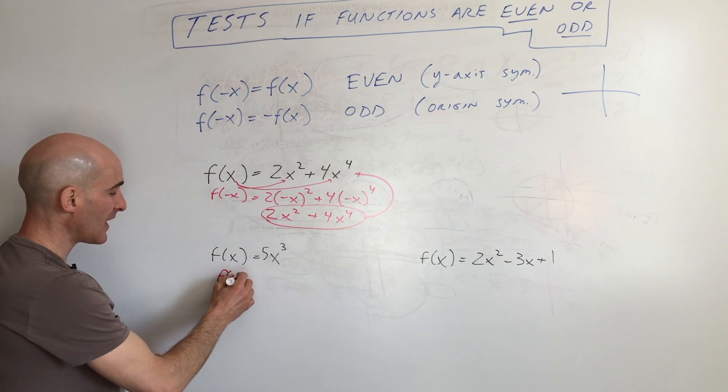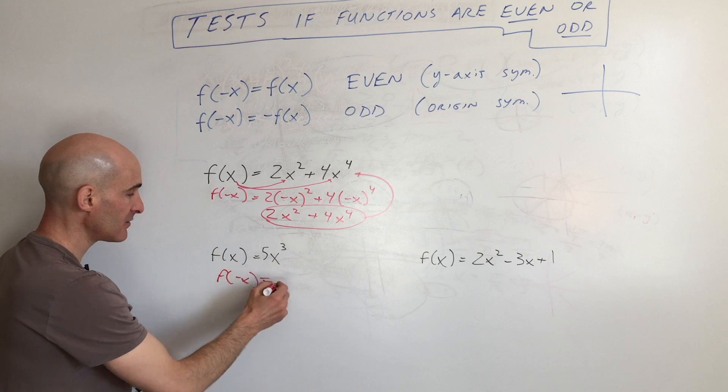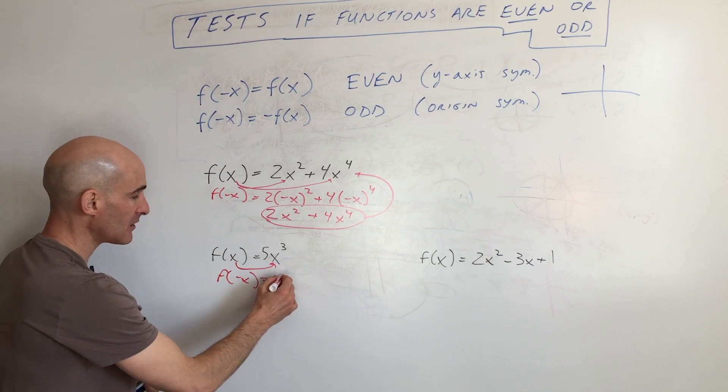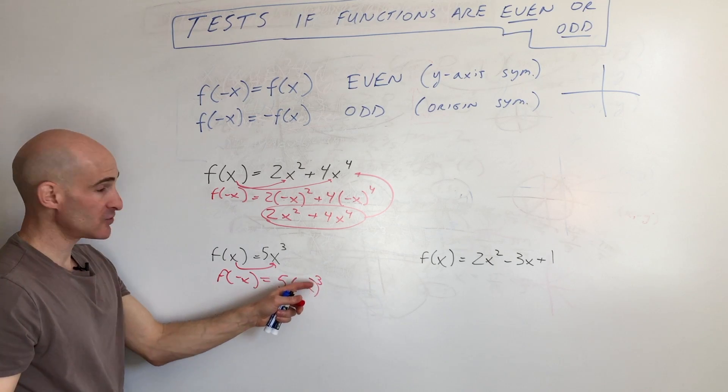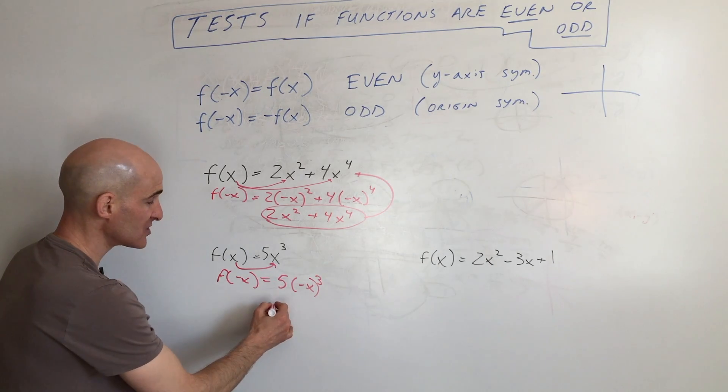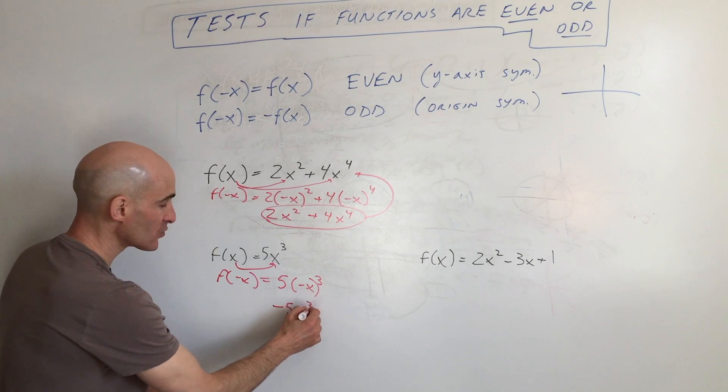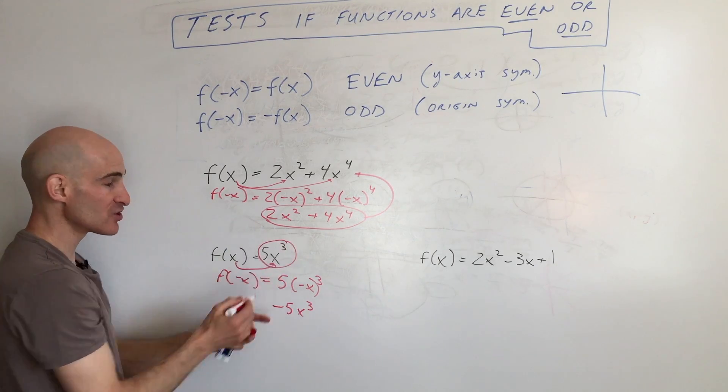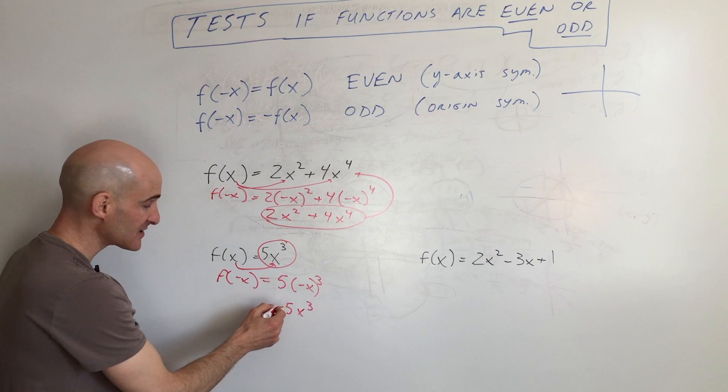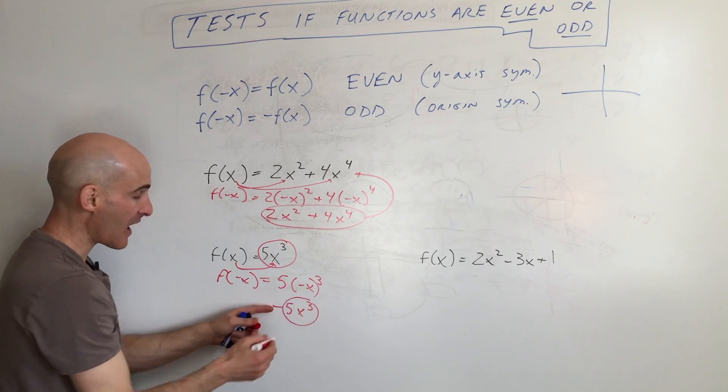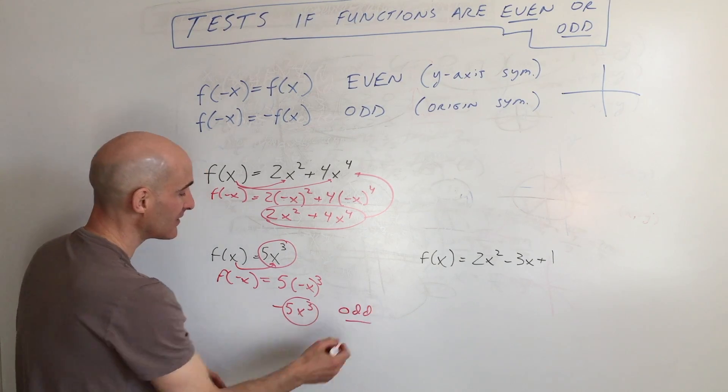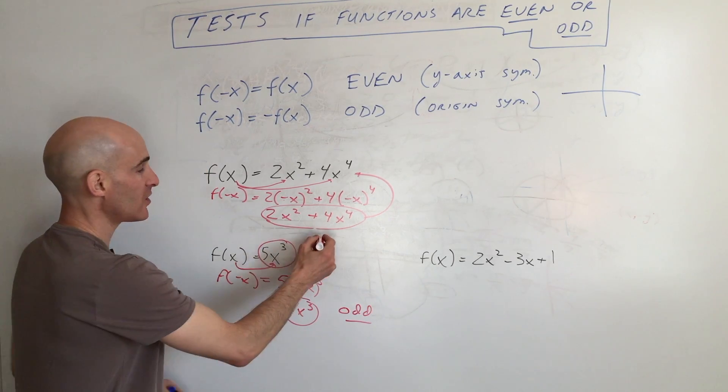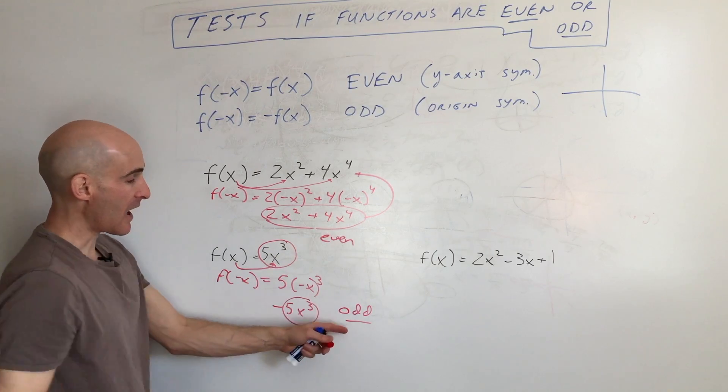Same thing over here, we're going to put negative x in place of x here on the right. And if we do that, we get a negative to an odd power, which is going to be negative. So this works out to be negative 5x cubed. It's exactly like the original function, but the sign here is the opposite. So that tells us that this is odd. So we have even for this one, odd for this one.